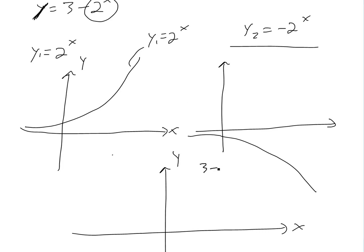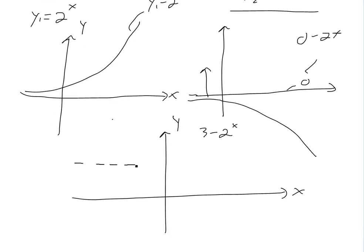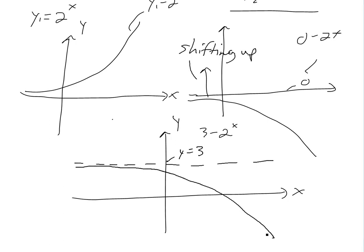Now let's combine them. We have y equals 3 minus 2 to the x. What the 3 does is shift the graph up. If we had zero minus 2 to the x, now we have 3 minus 2 to the x — all we're doing is adding 3, shifting it up. So the final graph looks like the decreasing curve shifted up, with a horizontal asymptote at y equals 3.